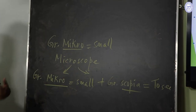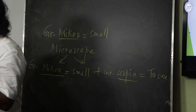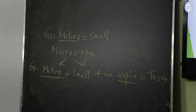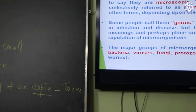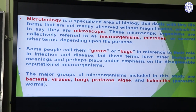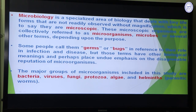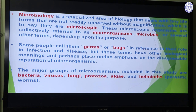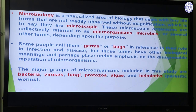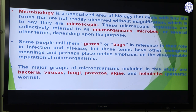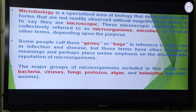The microscope is the instrument used to see these small creatures or small organisms. Some people call them germs or bugs in reference to their role in infection and disease, but those terms have other biological meanings and perhaps place undue emphasis on the disagreeable reputation of microorganisms. The major groups of microorganisms included in this study are bacteria, viruses, fungi, protozoa, algae, and helminths — and helminths are parasitic worms.